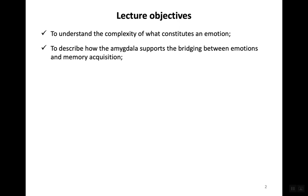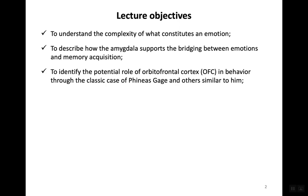We will look at how the amygdala supports the bridging between emotions and memory acquisition. Whenever people talk about emotion, the cortical structure most often discussed is the amygdala. But not just the amygdala — another important part of the cortex relevant for emotion-driven behavior is the orbitofrontal cortex.